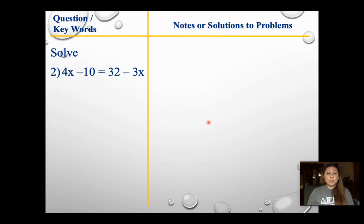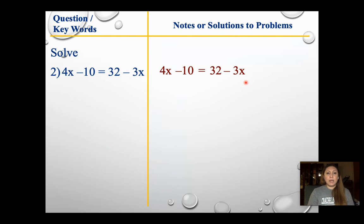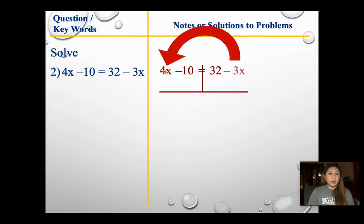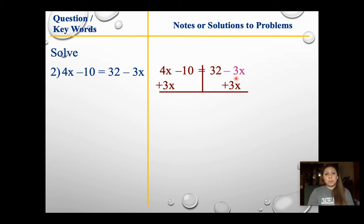For question two, I think distribute — I can't distribute on the left, can't distribute on the right, can't combine on either side. So step one is complete. Step two: look at the variables. I have a 4x and a negative 3x. The one I want to move is the negative 3x because it's smaller and I don't have to deal with negatives. So I'm going to add 3x to both sides. 4x plus 3x gives me 7x. Bring down negative 10, equals 32, and the 3x's cancel.